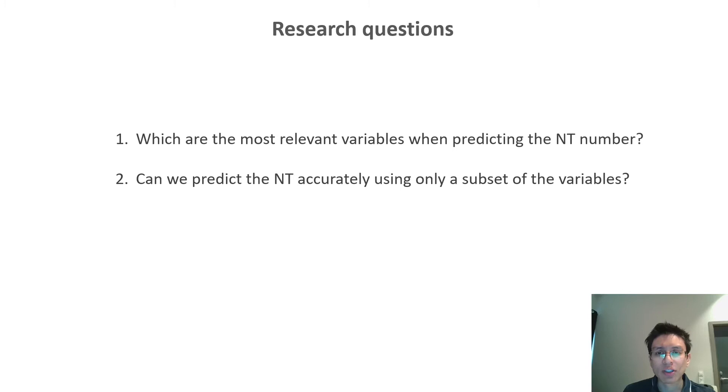In this work, we wanted to explore two research questions. The first one is which are the most relevant variables when predicting the NT number. And the second one is if we can predict the NT number accurately based only on a subset of the variables. The motivation for this is because sometimes some sensors may fail. So we want to know if we can still predict the NT value with the remaining sensors.